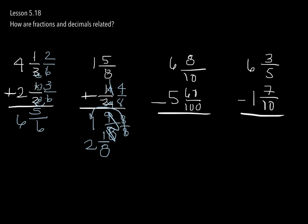Here we've got 6 and 8 tenths less 5 and 61 hundredths. So our common language is going to be hundredths. I'm going to just put that right there. That's going to be times 10, whatever I do to the bottom I do to the top. And that's going to be 80 over 100. So we have the same language here. So it's going to be over 100. 80 less 60 is going to be 20 over 100. 6 minus 5 is 1. Now I should be able to reduce this. Well, 20 goes into 100 five times. So it's going to be 1 and 1 fifth.